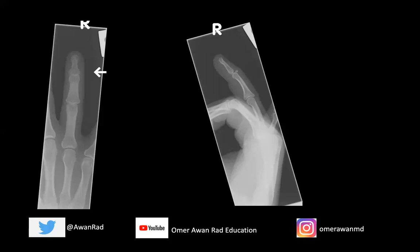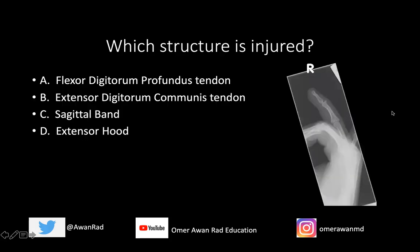Hello everyone and welcome to week 16 of MSK Unknown Case Series. I'm excited to show this case to you guys. We have a frontal and a lateral view of the right ring finger. Take a look at this — the question I have for you is: which structure is injured? Is it the flexor digitorum profundus tendon, the extensor digitorum communis tendon, the sagittal band, or the extensor hood?